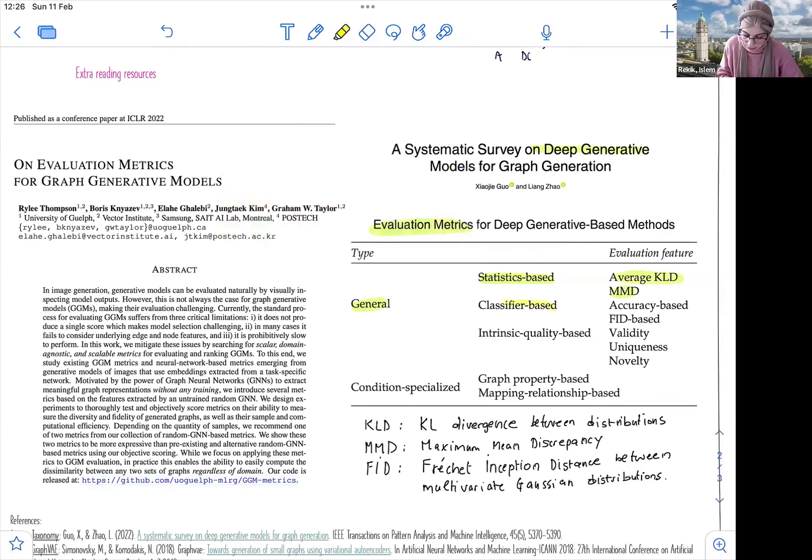You can use also classifier-based, which is a bit different. So the idea here is simple. You give to a classifier real data, so G, and you give it G fake, and you want, actually, you want it to predict if, you know, you want your classifier to tell you if this is real or fake. So if the classifier is able to classify this as real, it means that your classifier, that this G tilde is really good. So G tilde is good if the classifier identifies this as real, for example. So this is the key idea of classifier-based.